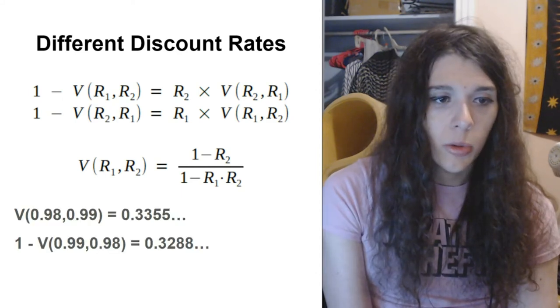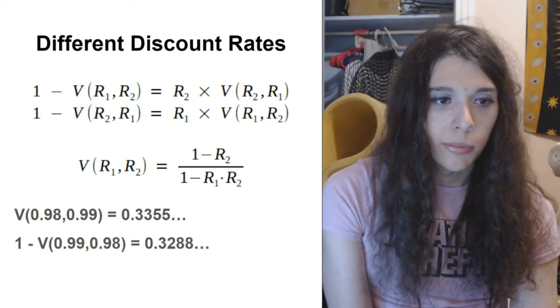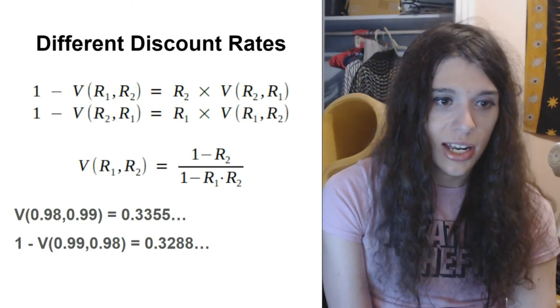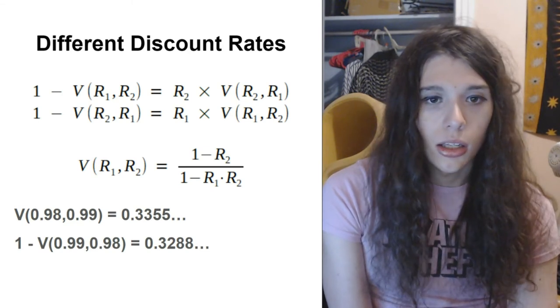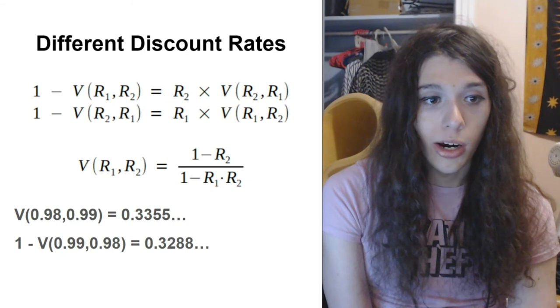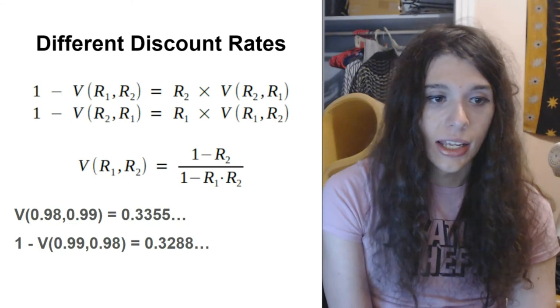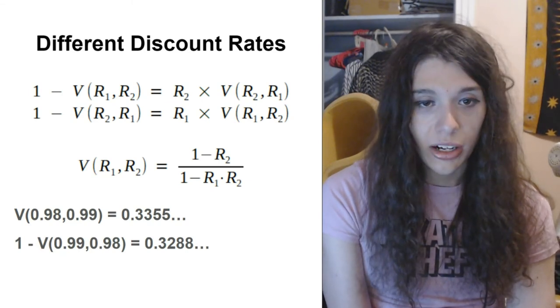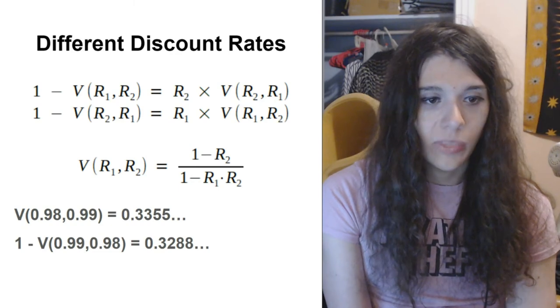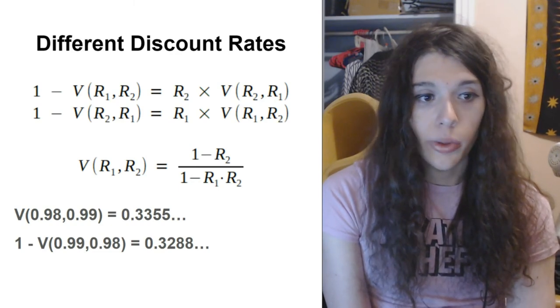So in this case, where we have minor amounts of discounting, both about 1% and 2% respectively, the person that discounts more, the person with 0.98, has a bigger disadvantage, even when they are proposing or when they are not proposing.